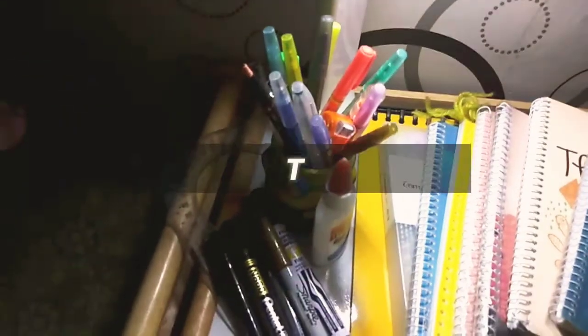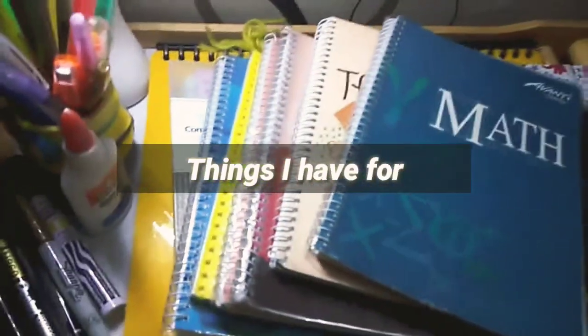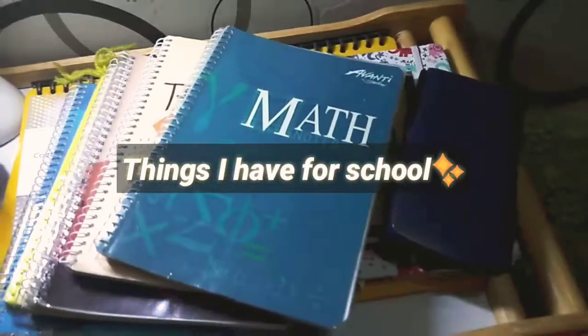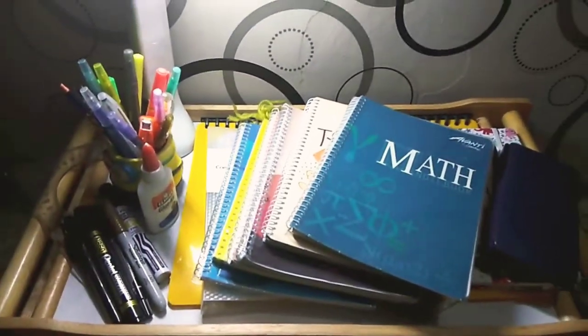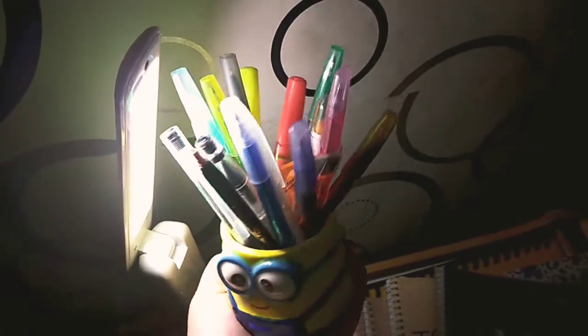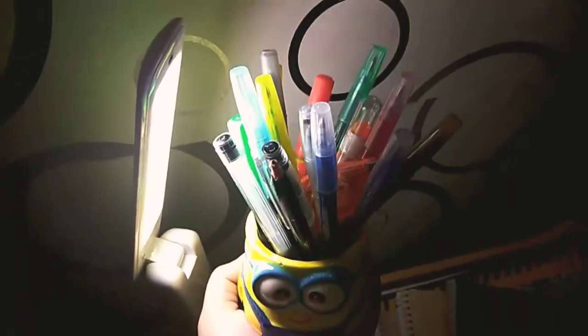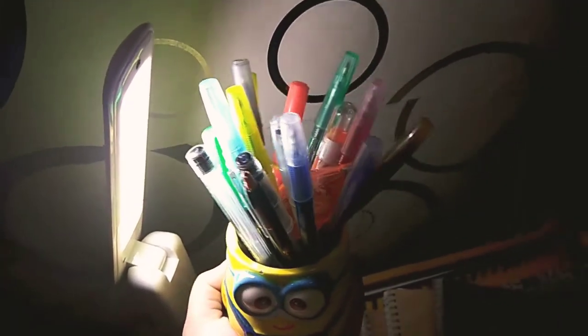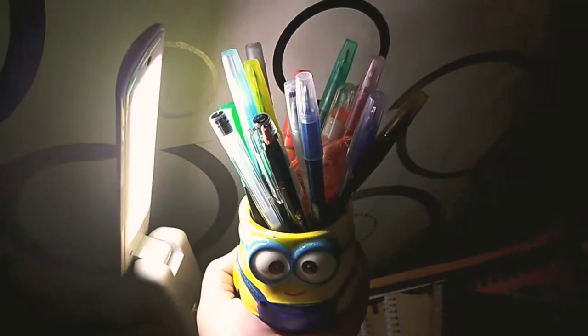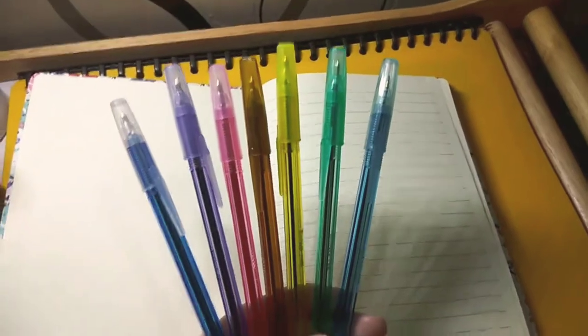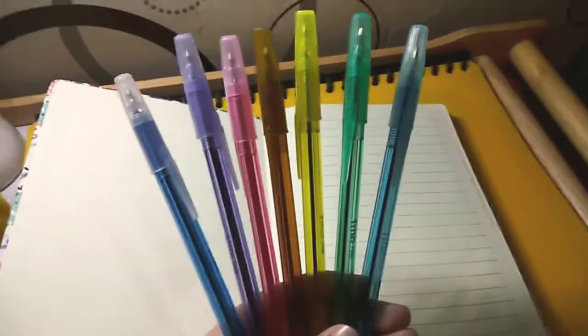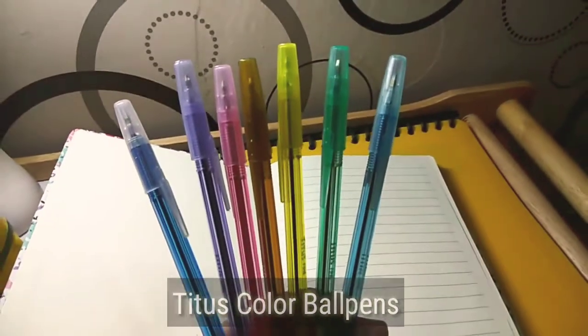Hey guys, for today's video I'm going to show you the things I have for school. So if you want to know the things I have for school, just keep on watching. The first thing I have is this cute minion pen holder where I put all my ball pens and highlighters. These are my Titus colored ball pens, and I only got seven of their colors.